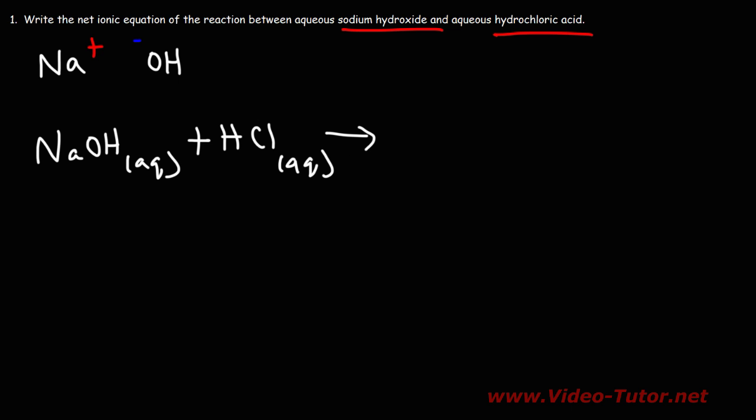Now we need to predict the products of this reaction. This is a double replacement reaction, and Na is going to pair up with Cl. They have a one-to-one charge, so we can simply write it as NaCl. And sodium chloride is soluble in water. So based on the solubility rules, we know it's going to be in an aqueous phase.